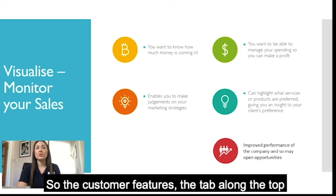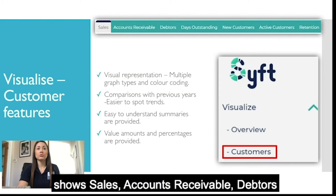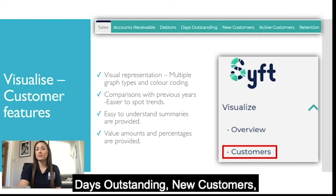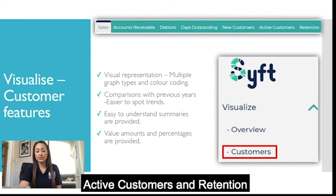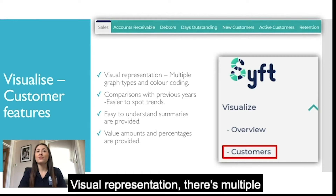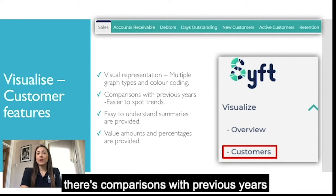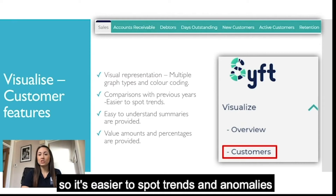The customer features tab along the top shows sales, accounts receivables, debtors, days outstanding, new customers, active customers and retention. The advantage is the visual representation — there are multiple graph types, colour coding, and comparisons with previous years, making it easier to spot trends and anomalies. Summaries are provided so if you're not an accountant it clearly explains things, and value amounts and percentages are also provided.